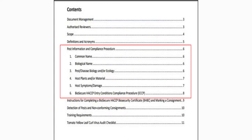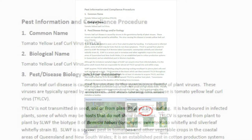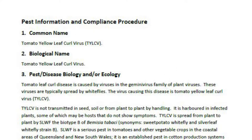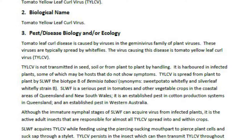The next section, Pest Information and Compliance Procedures, is separated into six sub-sections. The first three provide the common and biological names of the pest, and a description of the biology and ecology of the pest, including photos.